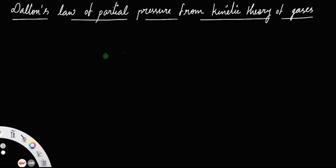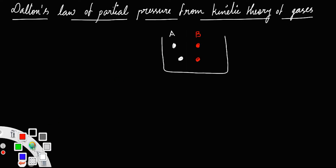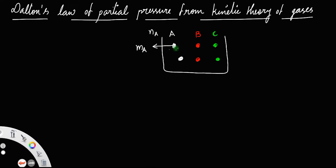Now let us derive Dalton's law of partial pressure from the kinetic theory of gases. Consider a beaker consisting of three different types of gases: gas A, gas B, and gas C. For simplicity, we draw only two molecules of each, though actually there are many. Let the mass of each molecule of A be MA, with NA moles of A; mass of each molecule of B be MB, with NB moles of B; and mass of each molecule of C be MC, with NC moles of C.